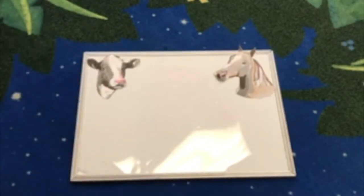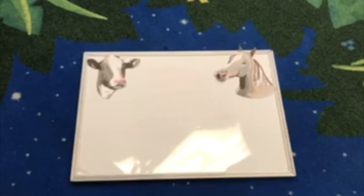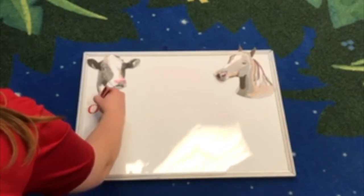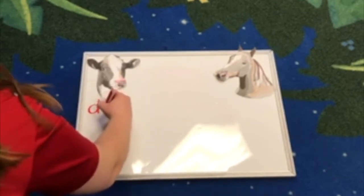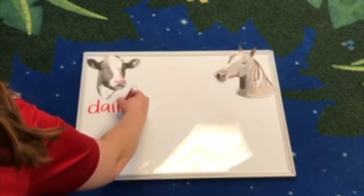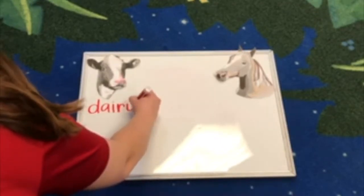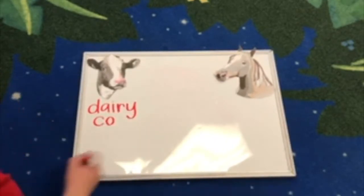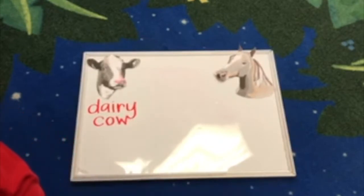On our whiteboard we are going to discuss the similarities between dairy cows and horses, but first we're going to spell the words dairy, cow, and horse. Starting with dairy: dairy is spelled D-A-I-R-Y. Now let's spell cow: C-O-W. This is how we spell dairy cow.